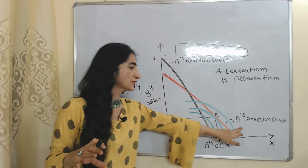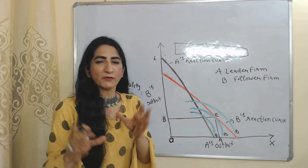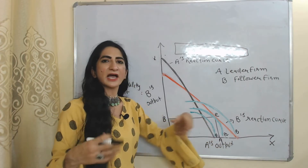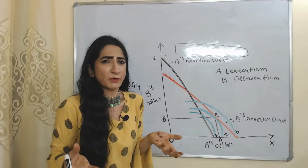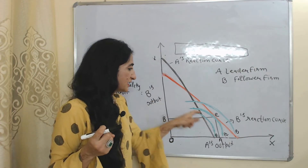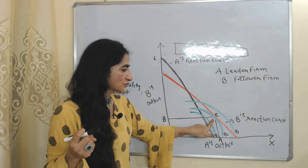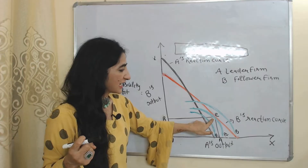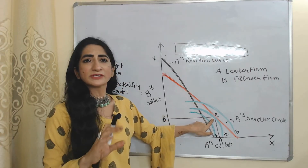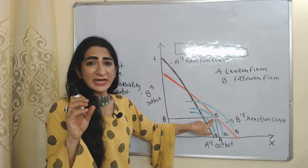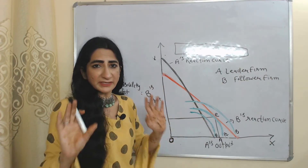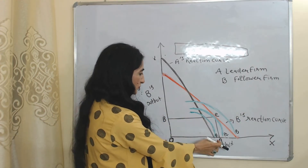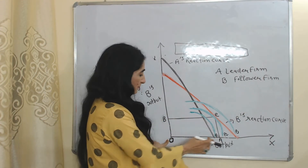Here you can see P1, P2, and P3 are the isoprofit curves of A, which show the profit of A. At point E, you can see the lowest point of A's isoprofit curve touches B's reaction curve. That is why this E point is called the Stackelberg equilibrium point — at this point, A decides its profit-maximization output based on the response of B.